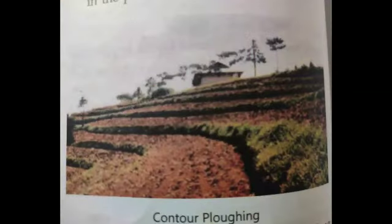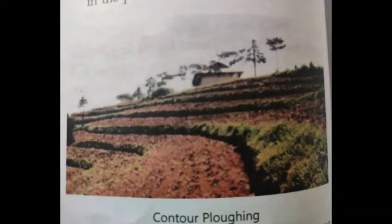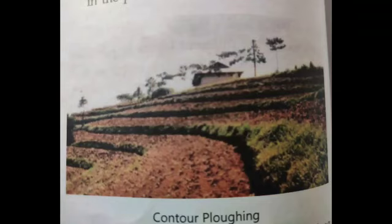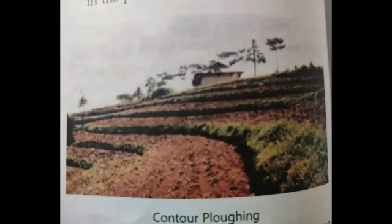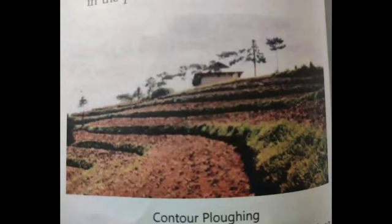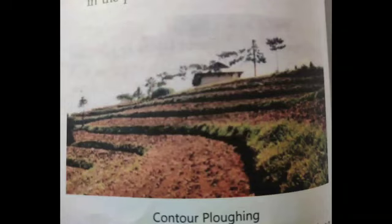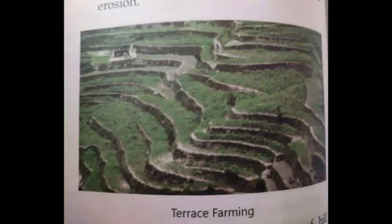Soil is the most important natural resource for man as he is directly or indirectly dependent on it. Soil needs to be conserved for sustained productivity of food grains. There are many methods of soil conservation. The first is afforestation — planting of trees on wasteland — which is helpful in the preservation of the topsoil. Contour plowing means cultivation along the contour lines instead of up and down the slope, which reduces the force of running water and reduces soil erosion. The next is terrace farming, where cutting down hill slopes into terraces or steps will retard the flow of running water.